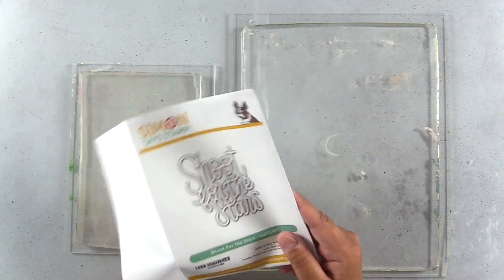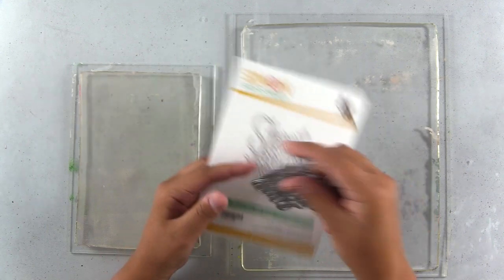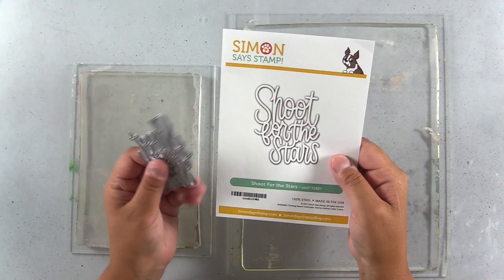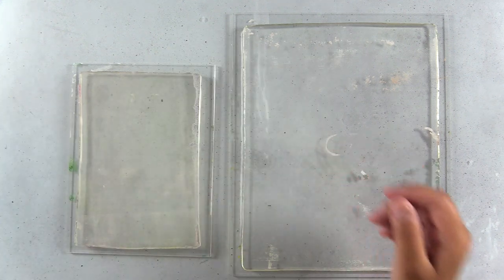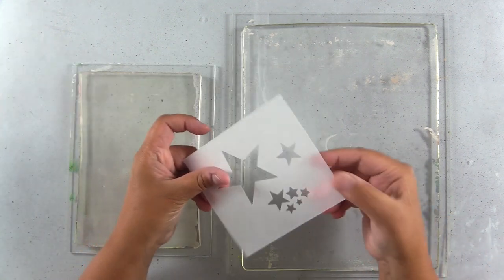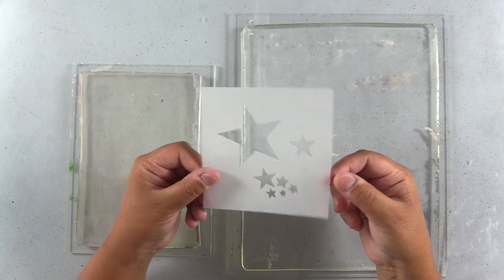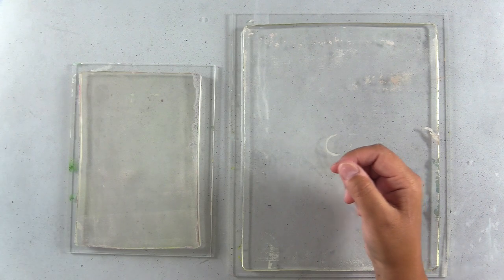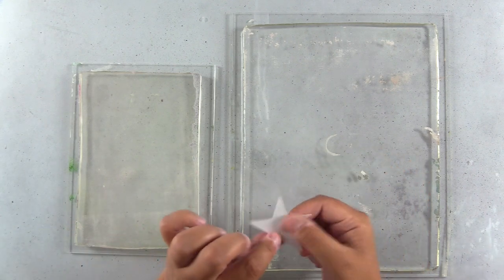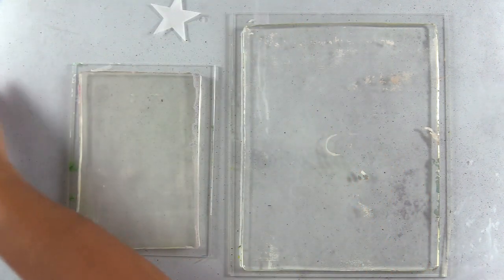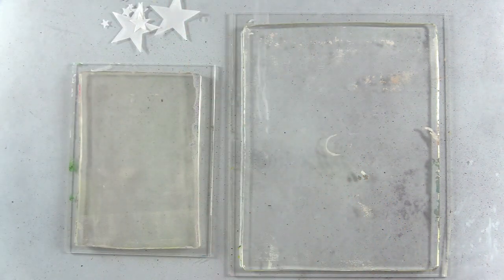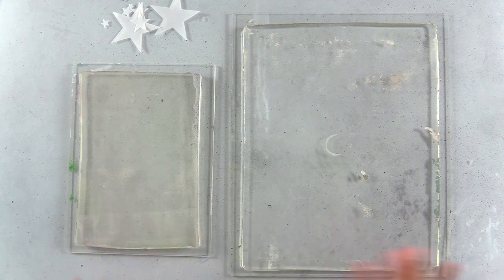Simon Says Stamp just dropped their Make Magic release and I have the Shoot for the Stars die here. To go along with the sentiments theme, we'll need some stars for our gel printing. So I pulled out some of my star dies and I took a piece of vellum and just created this mask. So I have a couple different sizes here, also a small cluster of stars, and then I also have the positive pieces. We're going to use the positive and the negative of these in our gel printing process.